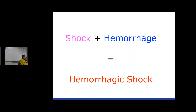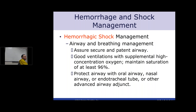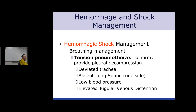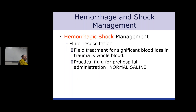Tension pneumothorax signs: deviated trachea, absent ipsilateral lung sounds, low blood pressure due to decreased preload, and elevated jugular venous distension — JVD increases because blood can't get into the heart well and backs up.